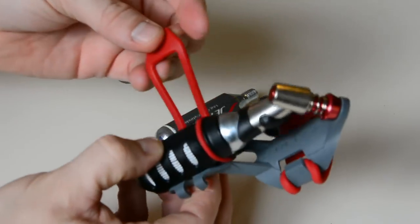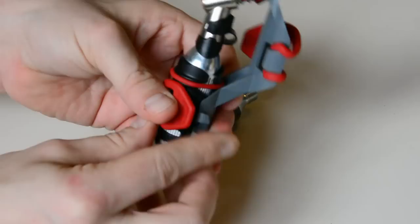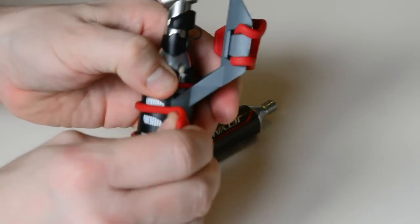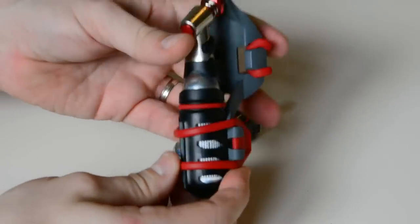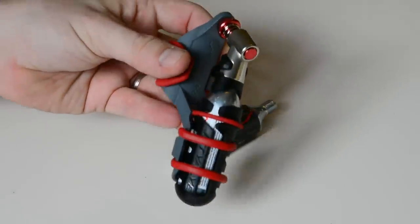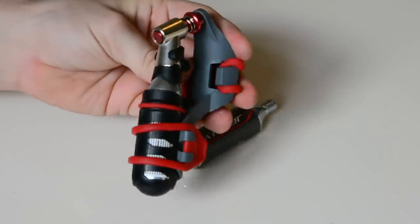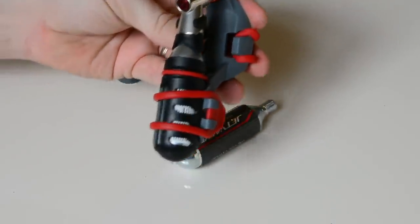To stop it falling out we've got this little rubber strap which goes round and then that will just hold it in place so it's on the back of your seat post. There's absolutely no way that's going to come off or drop.